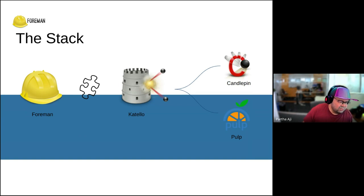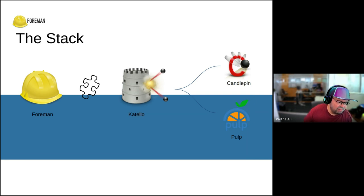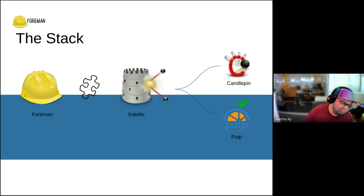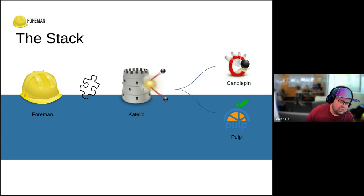There's Foreman, and there's Katello, which is the content plugin to Foreman. Katello is responsible for talking to Candlepin and Pulp projects. It uses Pulp to manage RPMs and Candlepin to manage subscriptions.